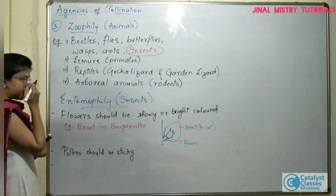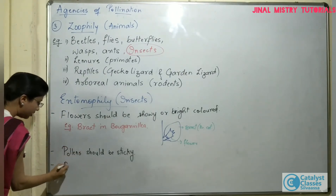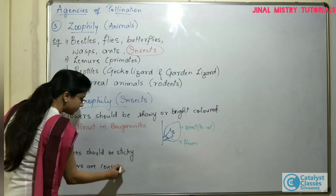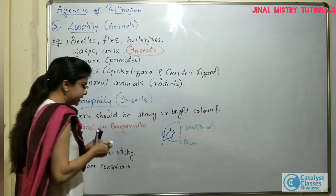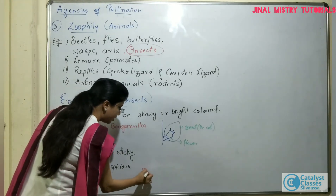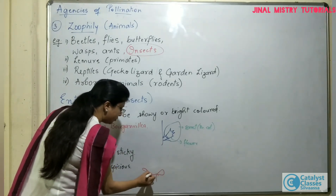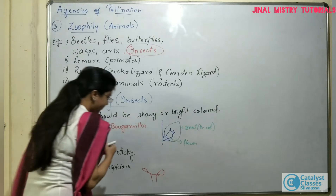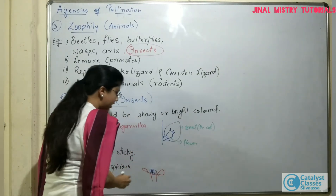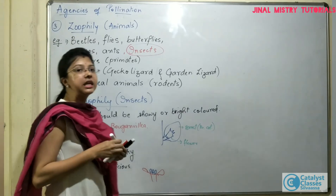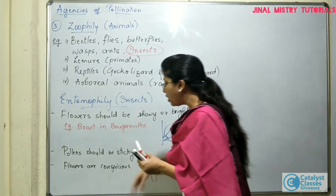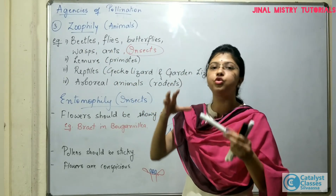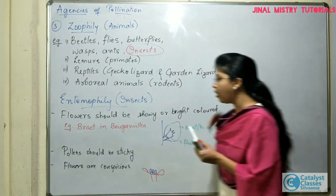The third characteristic of insect-pollinated flowers is that the flowers are conspicuous — that means they are grouped together. An example you can consider is that of sunflower. Sunflower has a capitulum type of inflorescence, and here there will be grouping. So the flowers, though they are small, will be grouped together so that insects get attracted. They will be small but conspicuous, so that insects from far away can see as if there is a huge flower present there and visit it for pollination.